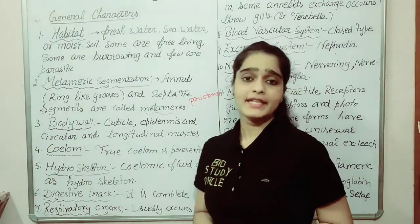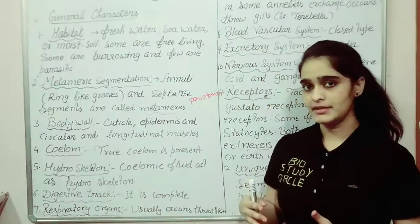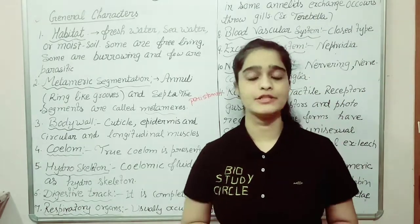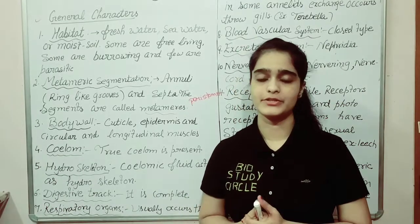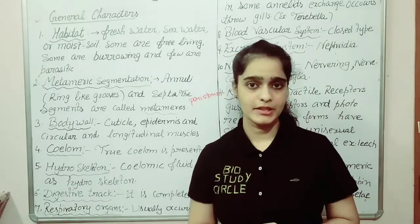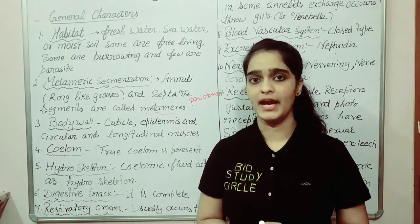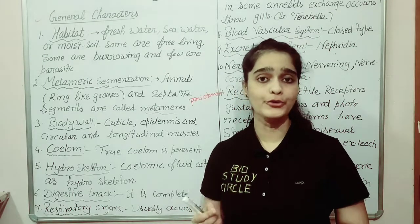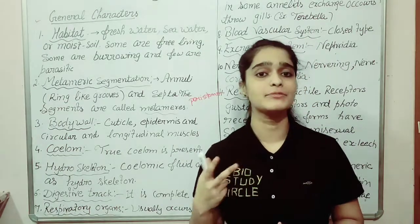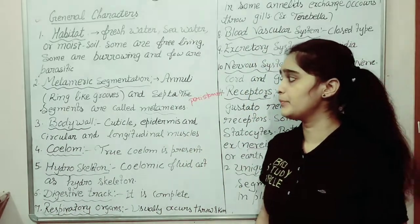Here is metameric segmentation. The body is divided into segments and the segments are also known as metameres. The first segment is called the peristomium, and the outgrowth which arises from the first segment is known as the prostomium.